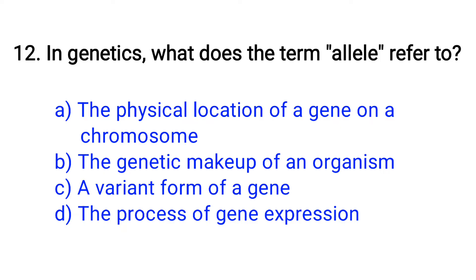Question number 12. In genetics, what does the term alleles refer to? Option A: The physical location of a gene on a chromosome, B: The genetic makeup of an organism, C: A variant form of a gene, D: The process of gene expression. The right answer is Option C: A variant form of a gene.